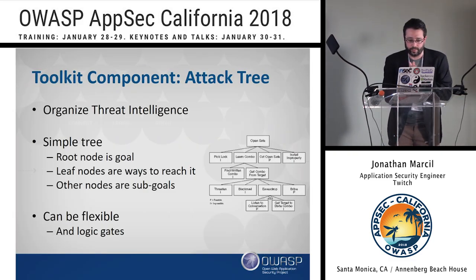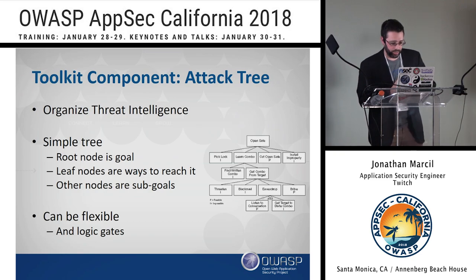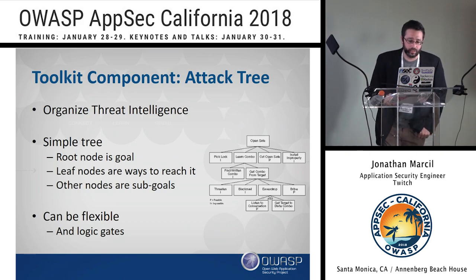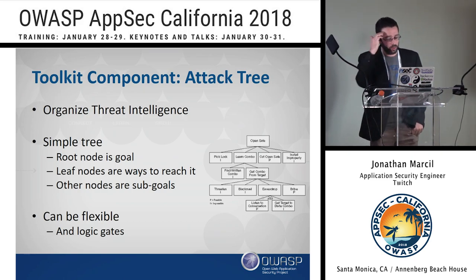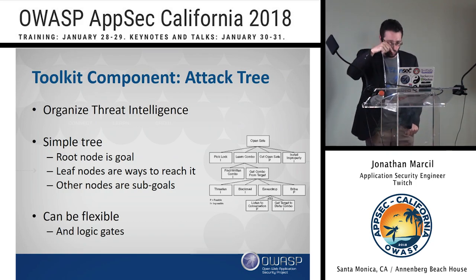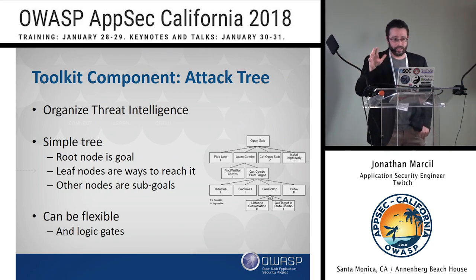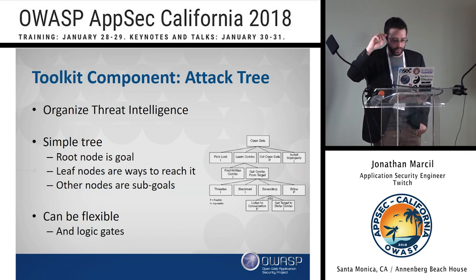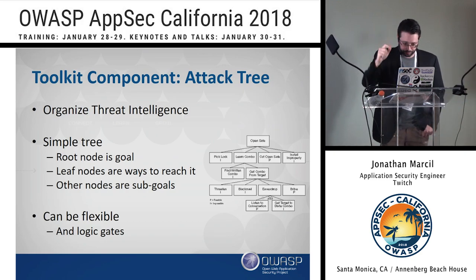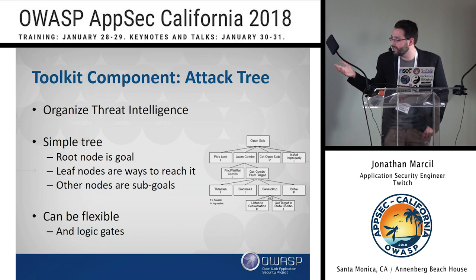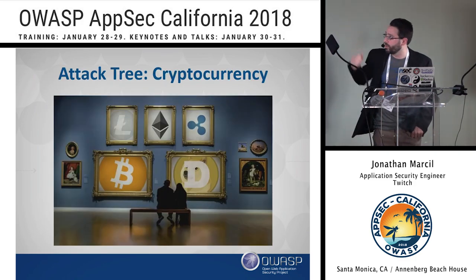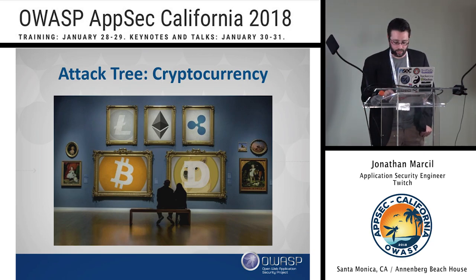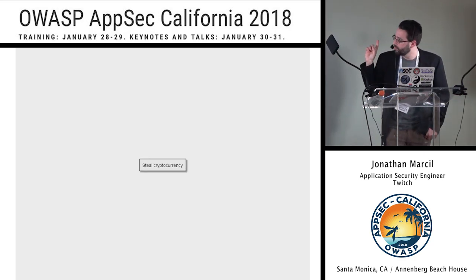I'm going to jump right away to the next actual component because we're half an hour in and this is the longest part. The attack tree is the next component — it's a way to organize threat intelligence. You'll now see the link between this and what we had before. An attack tree is basically just a simple tree where the root node is a goal and the leaf nodes are the ways to reach it. Other nodes are the sub-goals. It can be flexible and have some logic gates.